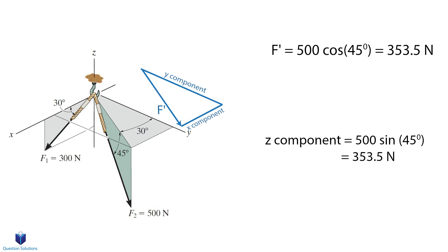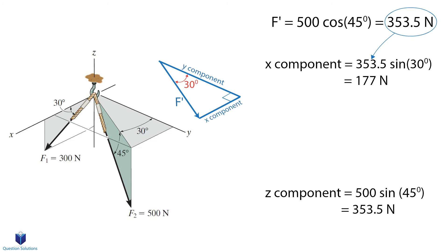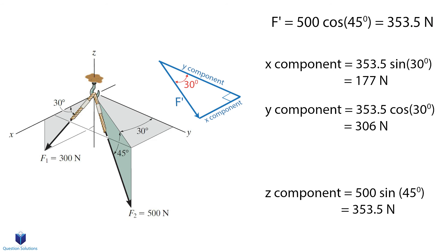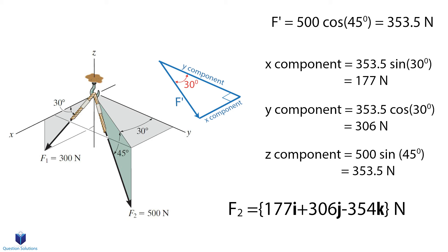We can now use F' to find the x and y components. Notice how F' is the hypotenuse of the new triangle we just formed. This is a right angle triangle and we can use trigonometry to solve for the x and y components. The x component is equal to 353.5 newtons multiplied by sine 30 degrees, which when solved is equal to 177 newtons. The y component is equal to 353.5 newtons multiplied by cosine 30 degrees, which when solved equals 306 newtons. Finally, let's write down force F2 in Cartesian vector notation, which is 177i plus 306j negative 354k newtons. Notice that our k value is negative because the z component of force F2 is in the negative z direction.